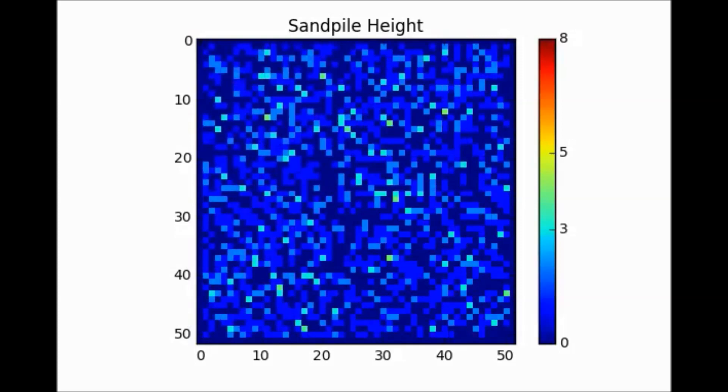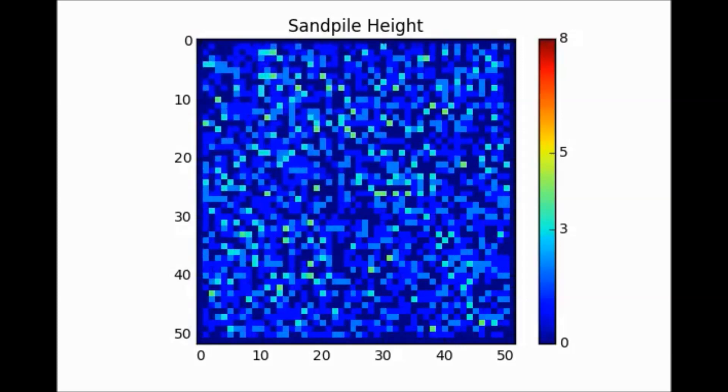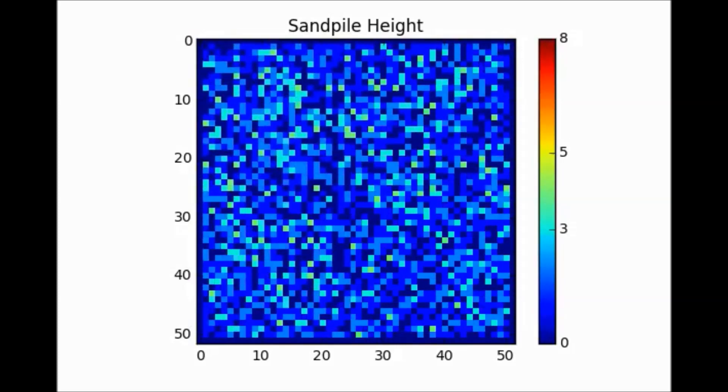We drop grains on a randomly chosen place on the table and repeat the act after all motion has terminated. In the beginning, the grains just fall on the table in no particular pattern. The system is close to the state with minimal energy, the flat sand pile. The system can also be characterized as linear. Small perturbations only cause small responses.